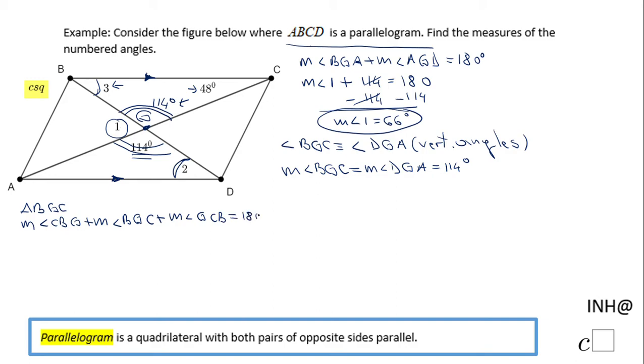The sum of the interior angles of a triangle is 180 degrees. Angle CBG is angle 3, which we need to find. BGC is 114 because it's a vertical angle with the one that is 114, and GCB is 48 degrees, given to us.